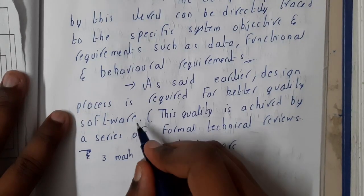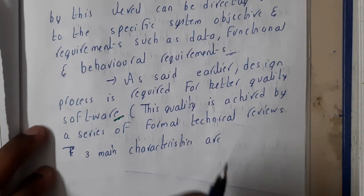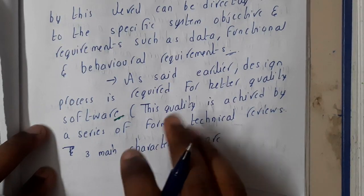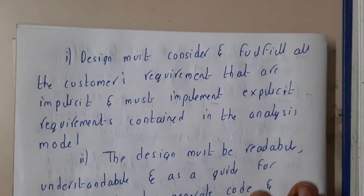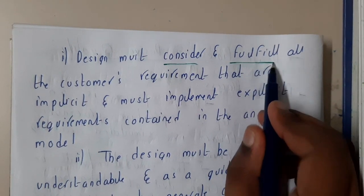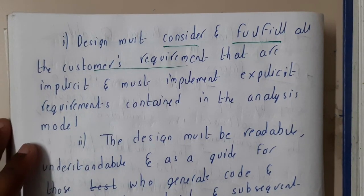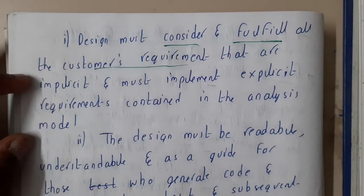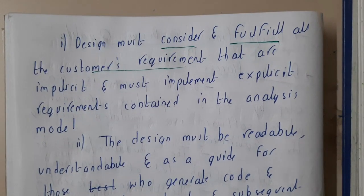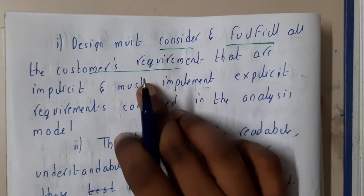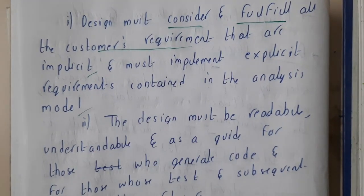The design process is required for better quality of software. If you are planning to have good quality software that is user friendly and easy to understand, you need to do the design process in a perfect way. There are three main characteristics. First, design must fulfill all the customer requirements - once you are in the design stage, the next stage is coding, and if the design is not appropriate based on user requirements then the whole project will be flawed. It should be exactly according to the customer's implicit and explicit requirements as contained in the analysis model.